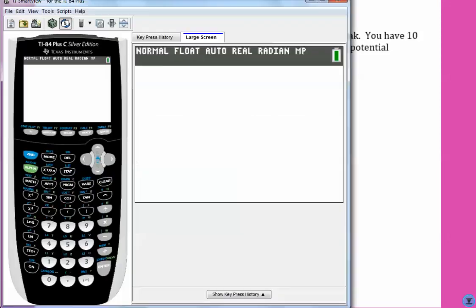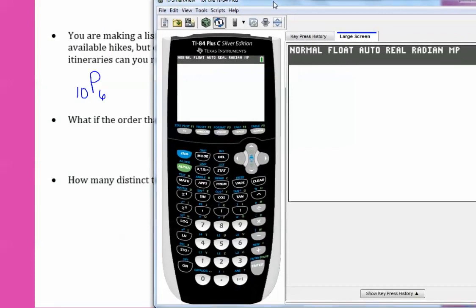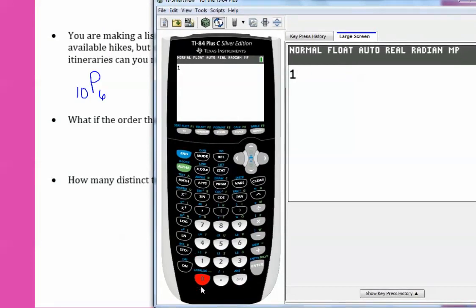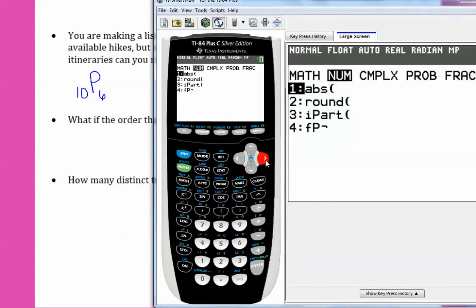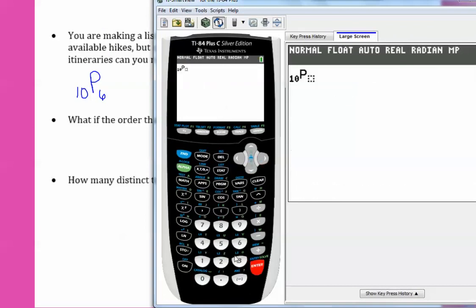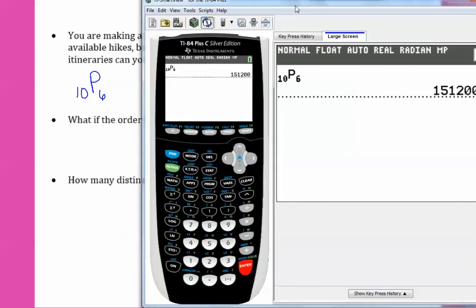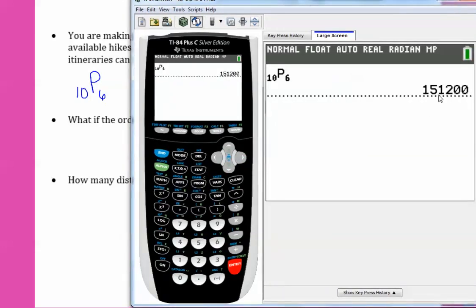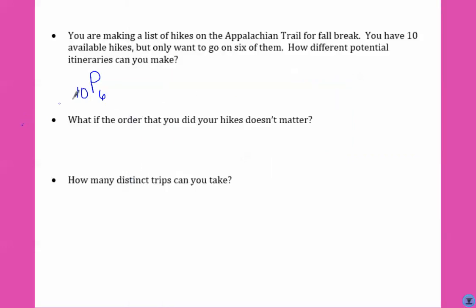So on your calculator, you would do 10, math, go over to probability, the prob menu, and choose NPR, and then six. And that means there's 151,200 different itineraries.